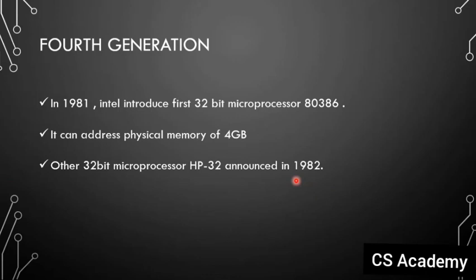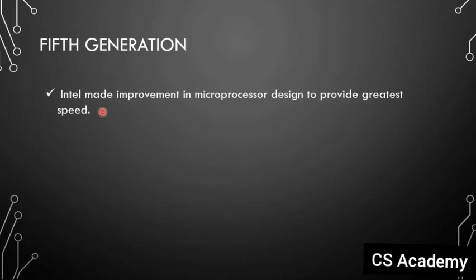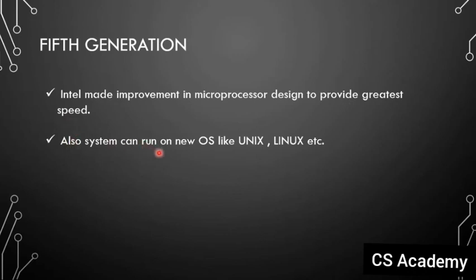The fifth generation: Intel made improvements in microprocessor design to provide greater speed. Systems can run on new operating systems like Linux and Unix. Intel improved their microprocessor and made it capable of running on new OS like Unix and Linux.